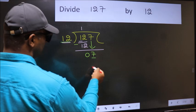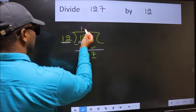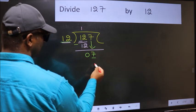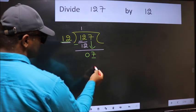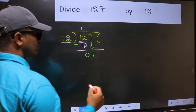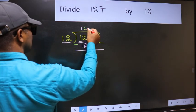Which number should we take here. If I take 1, we will get 12. But 12 is larger than 7. So what we should do is, we should take 0.